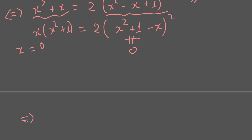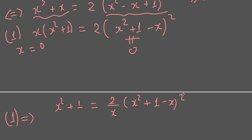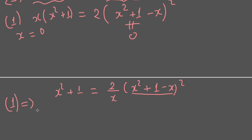After dividing by x, we get x² + 1 on the numerator side, and dividing by x turns the expression into 2 over x. Then we divide both sides again by x, giving us x + 1/x on the left, and 2 over x² on the right, with the factor (x² + 1 - x).